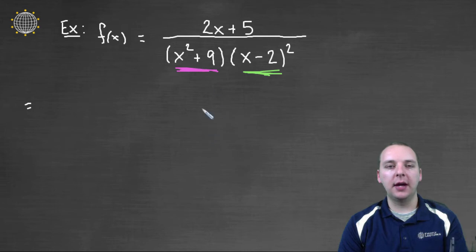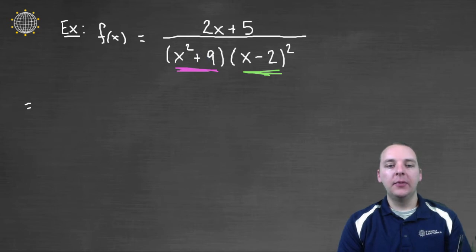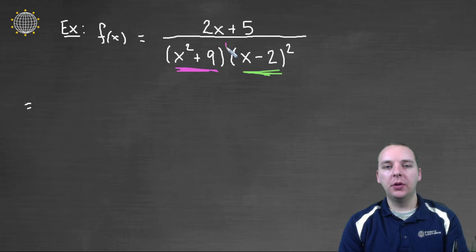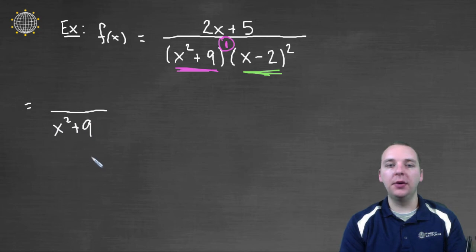Alright, let's start with the pink factor. Is this a linear factor, or a quadratic factor? Well, it's quadratic, which means in the decomposition, it'll contribute some of the terms in the decomposition. Now how many terms will it contribute? Well, look at its power, it has a power of one, so it's only going to contribute one term. Alright, the denominator will be x squared plus nine, period. Nothing else.